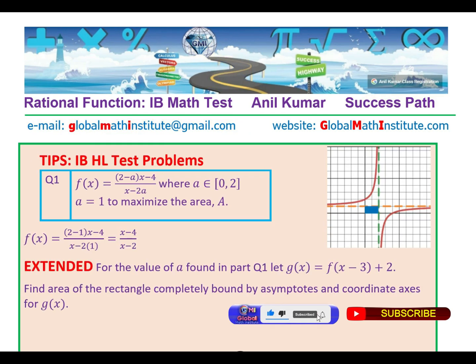So let's now look into the extended question. Extended question was, for the value of a found in part question 1, g(x) is equal to f(x-3) + 2. And we got here was that a = 1. And we also, by substituting a as 1, we found that the function f(x) is (x-4)/(x-2). Now the question is, find the area of rectangle completely bound by the asymptotes and the coordinate axis for g(x).